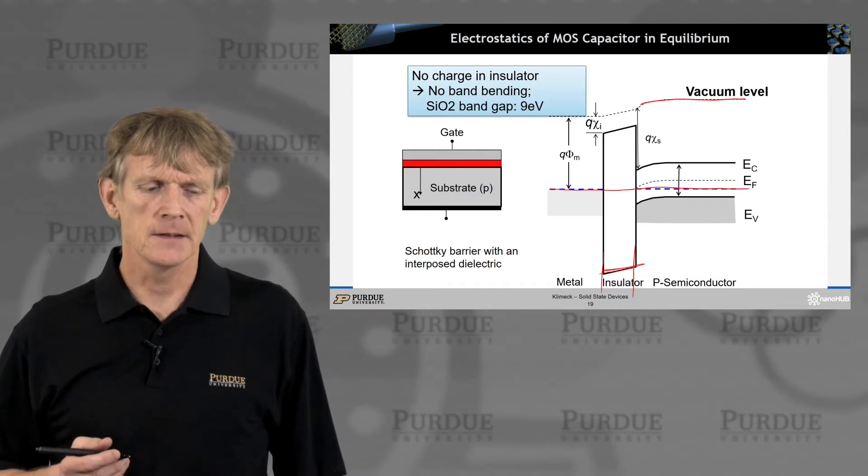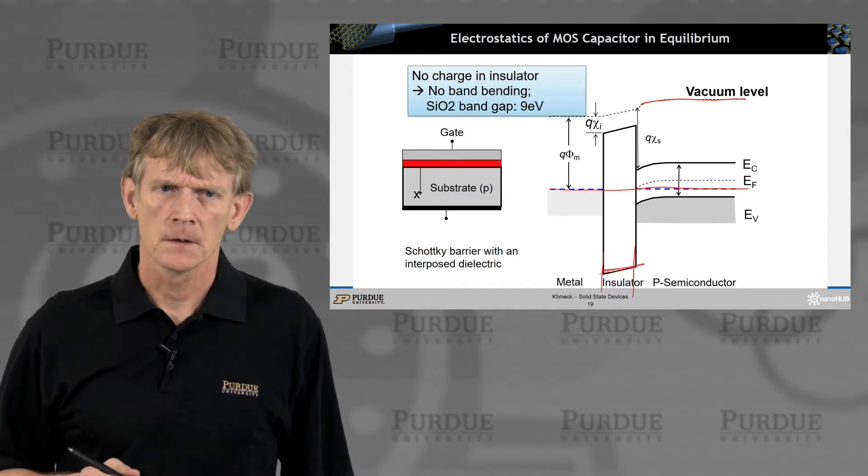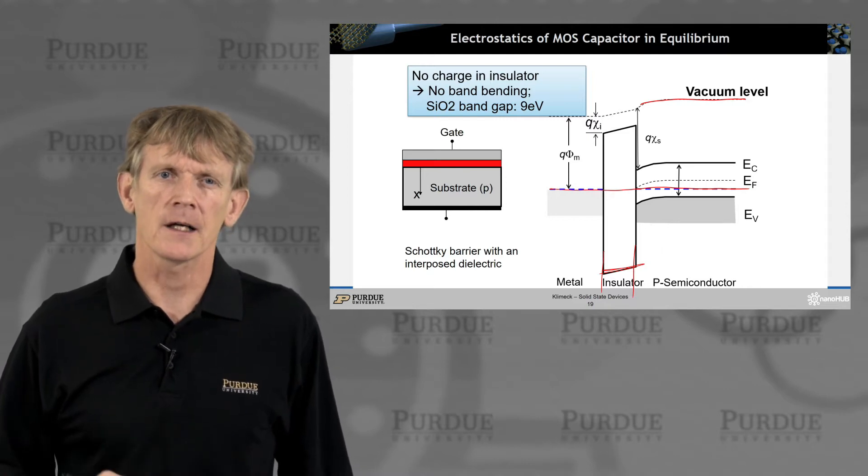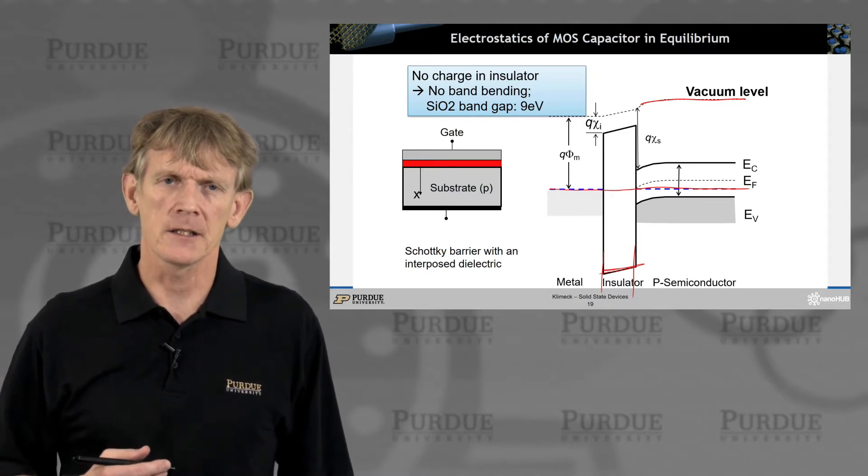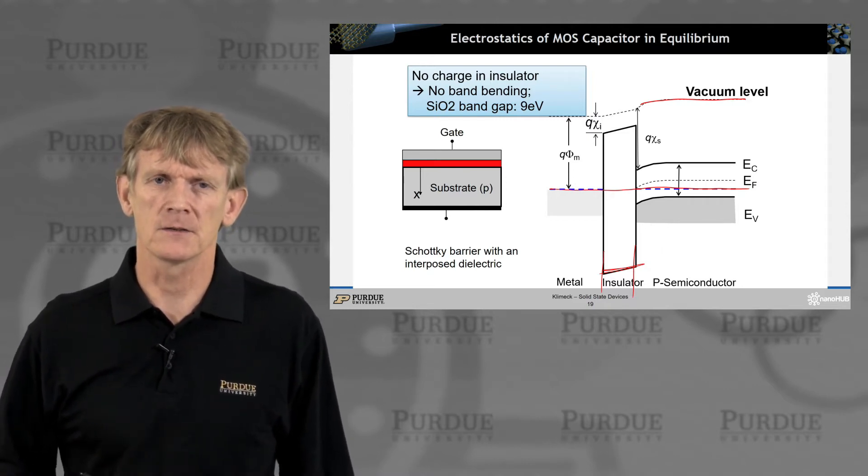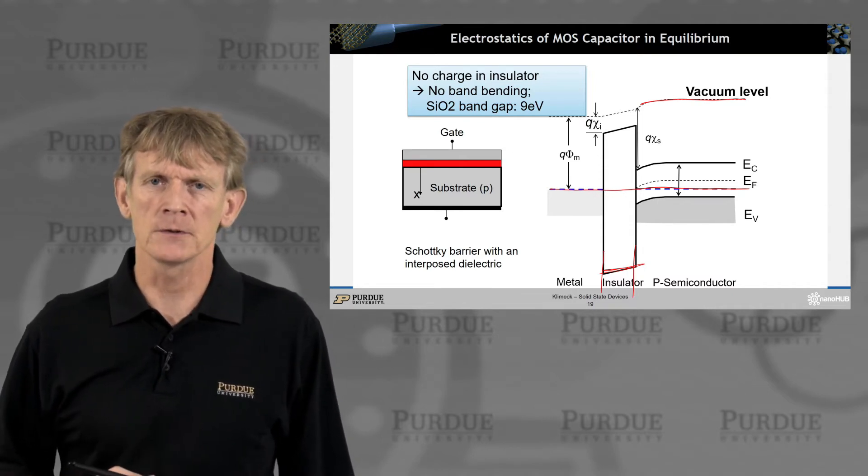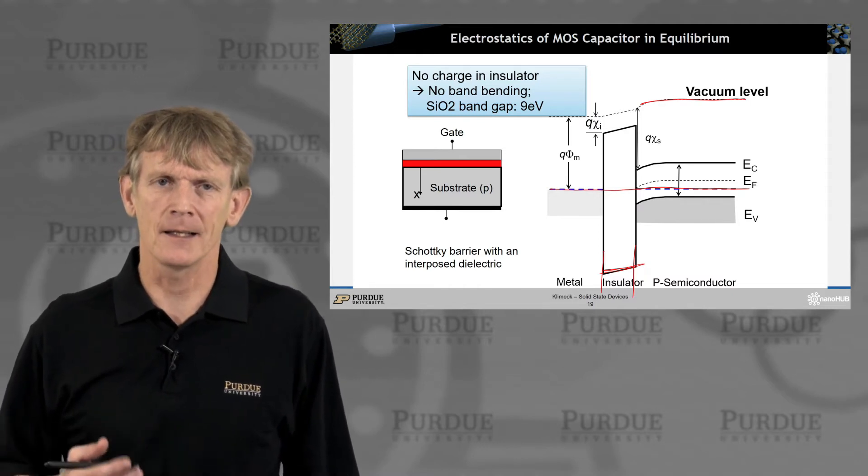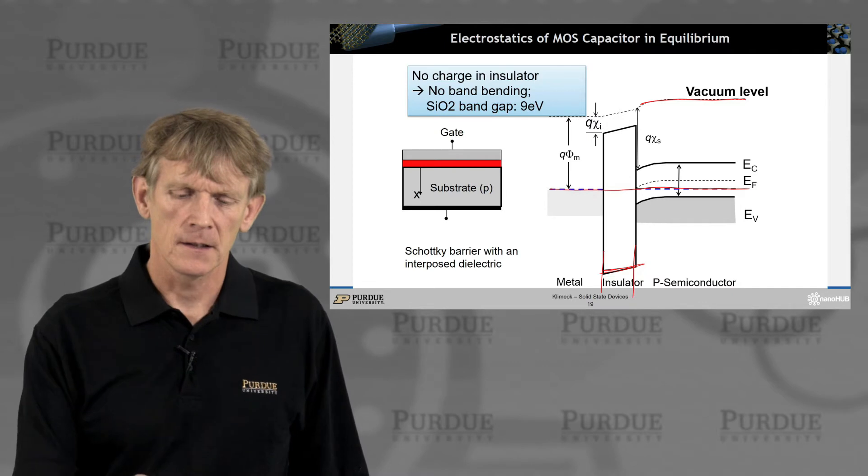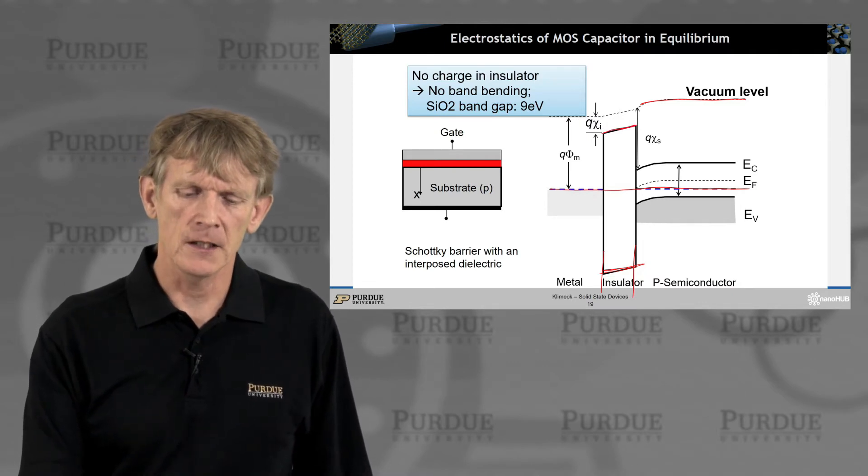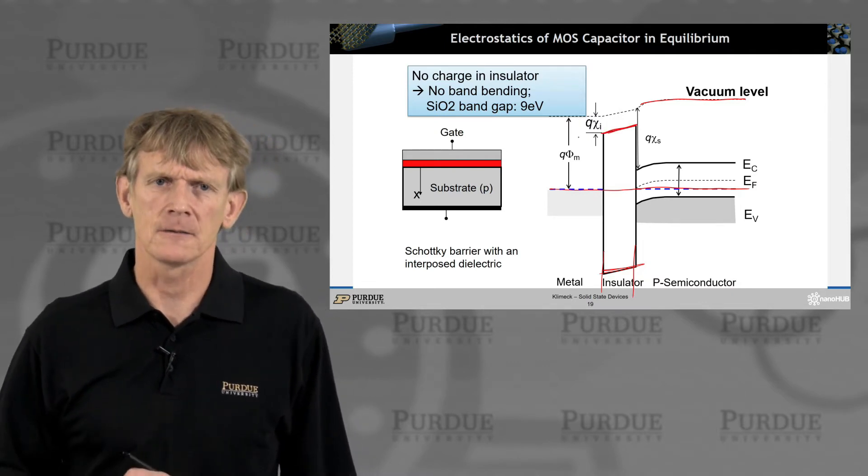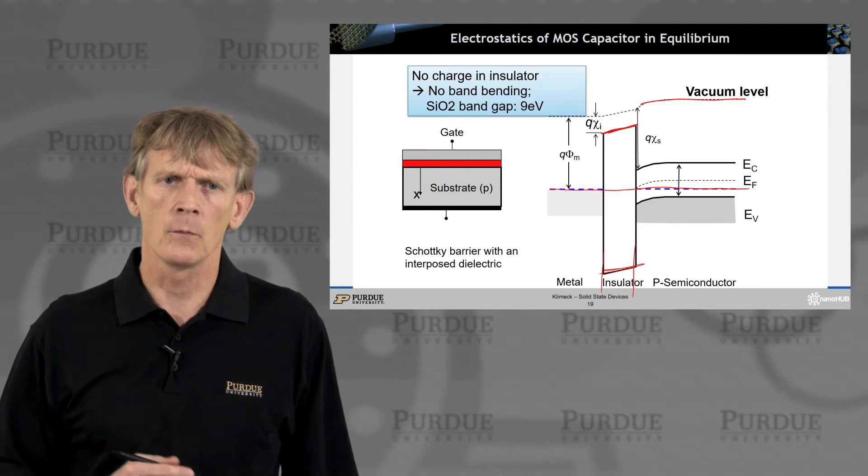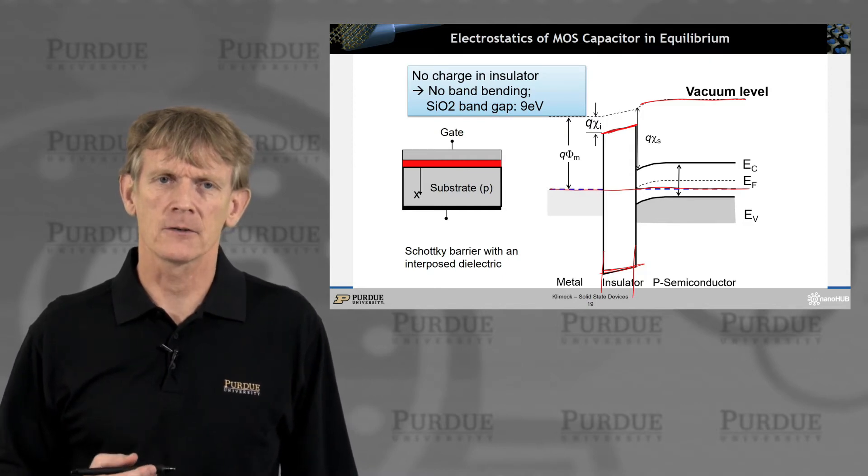Keep in mind, there is no charge in the insulator. Hopefully, the oxide is of very high quality, so you don't build in charges. It would be bad if these charges would be there, and it would be even worse if they move around. But if there is no charge, then it's a perfect dielectric, and that means the electric field here is constant. There is no modulation in the electric field.